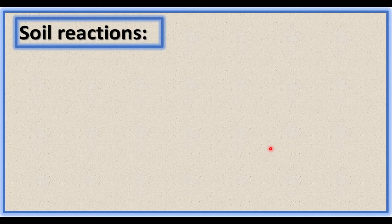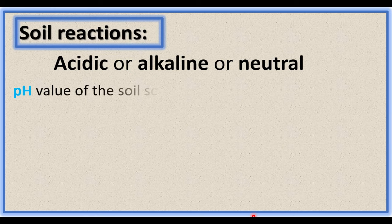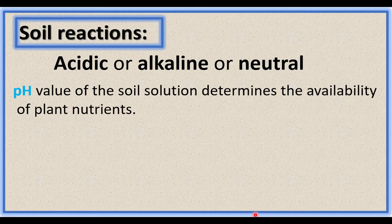There are three kinds of soil reactions: acidic, alkaline, or neutral. pH is a measure of acidity and alkalinity. The pH value of the soil solution determines the availability of plant nutrients in the soil.